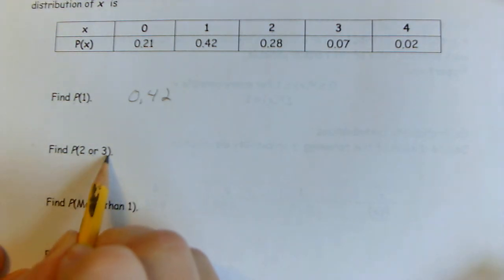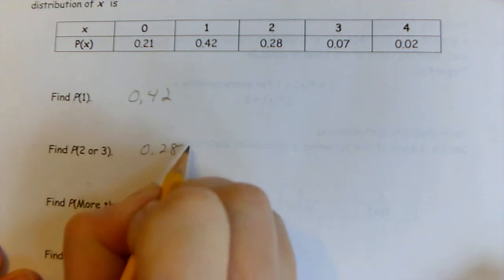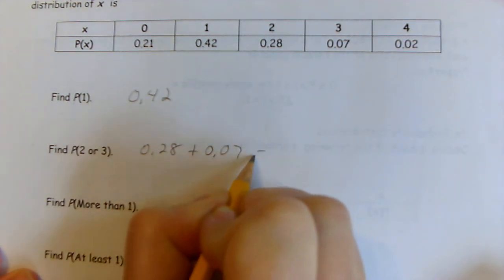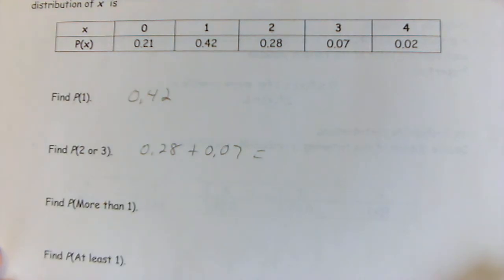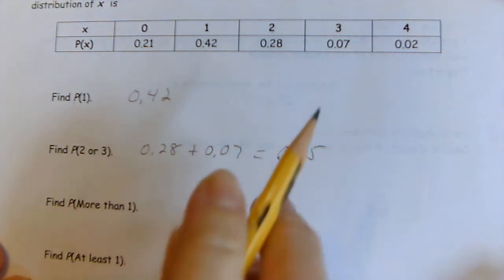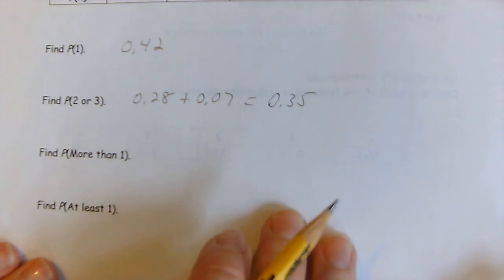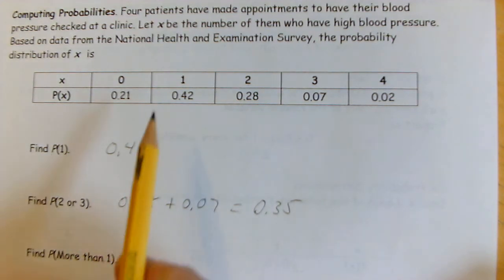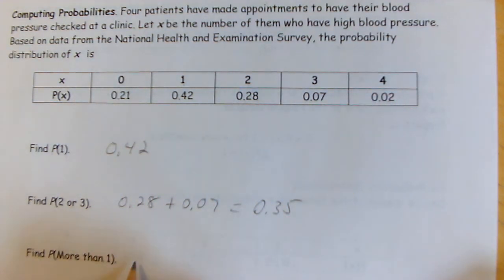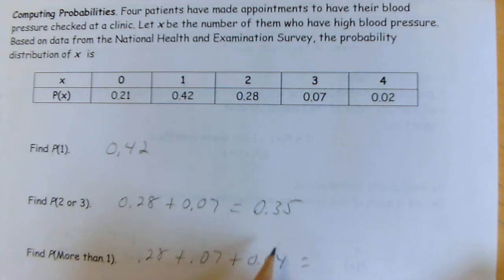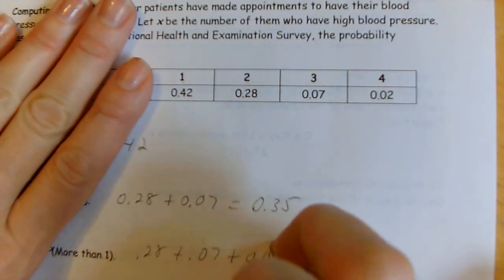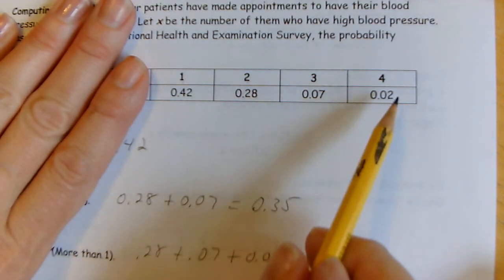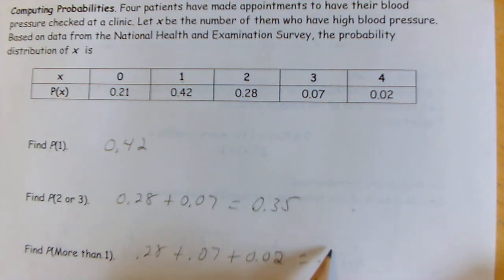What's the probability that two or more patients would have high blood pressure? We rule out zero and one, so we add the probabilities for two, three, and four patients. That gives us 0.28 plus 0.07 plus 0.02, which equals 0.37, or 37%.